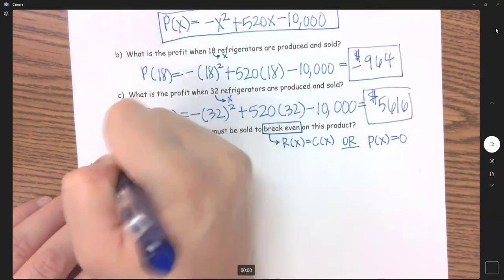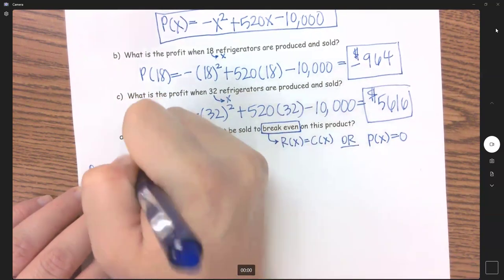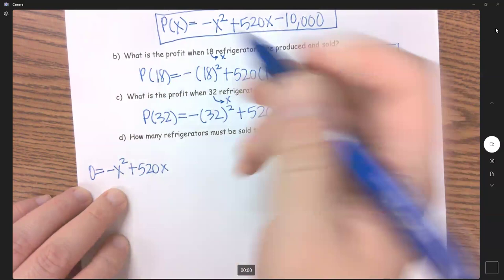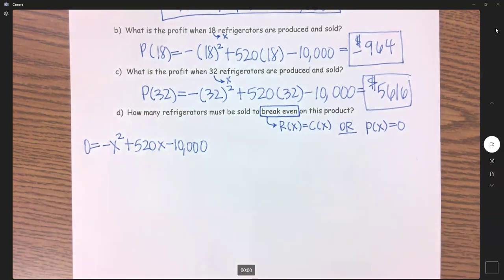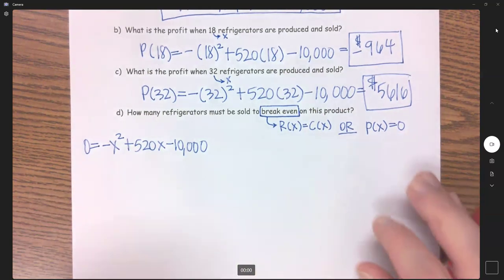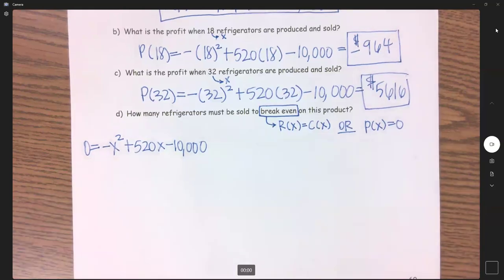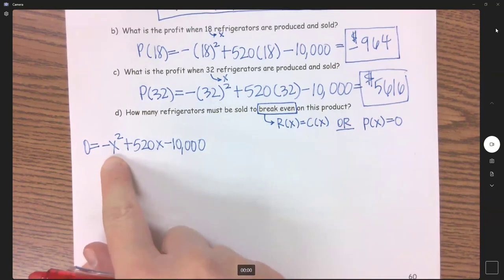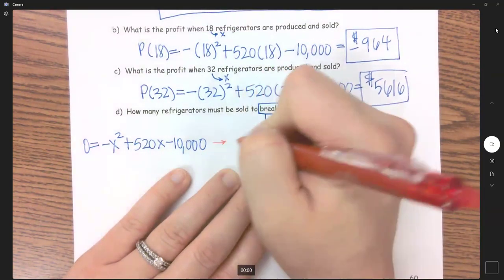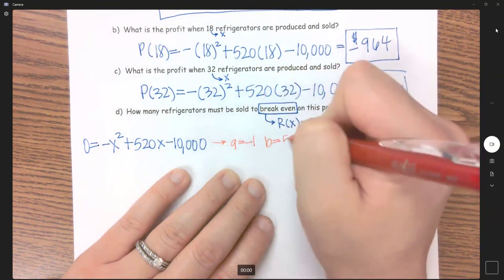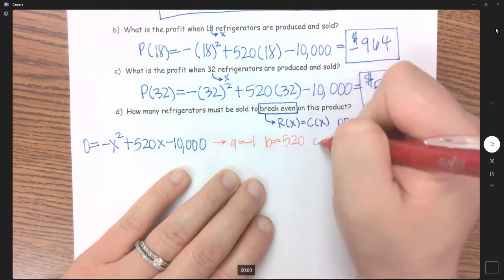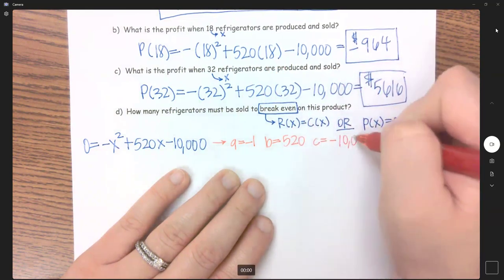So I have zero equals negative X squared plus 520X minus 10,000. And now we need to solve. It's in standard form, so I can go ahead and use my quadratic formula. It's okay that this A is negative because we are using quadratic formula. If we're factoring, we would want to fix that, but this is okay. So we have A equals negative 1, B equals 520, and C equals negative 10,000.